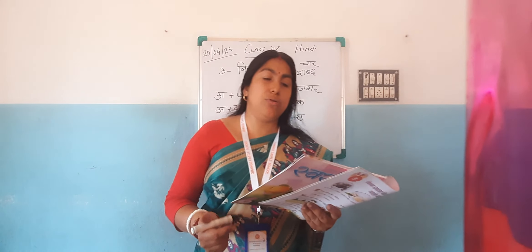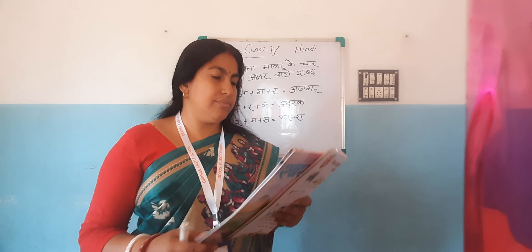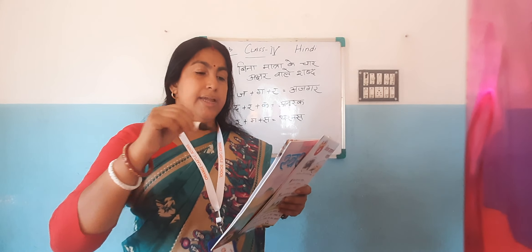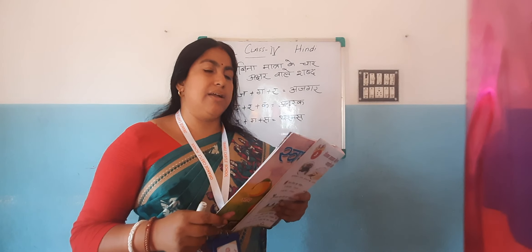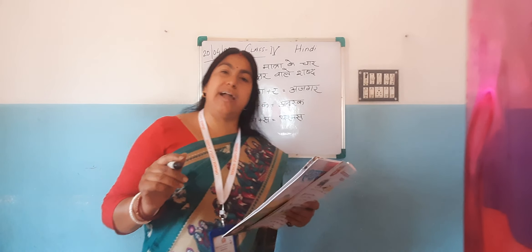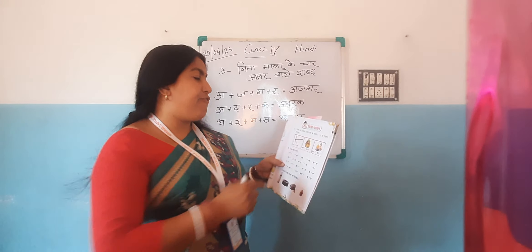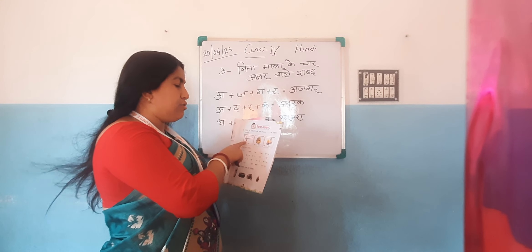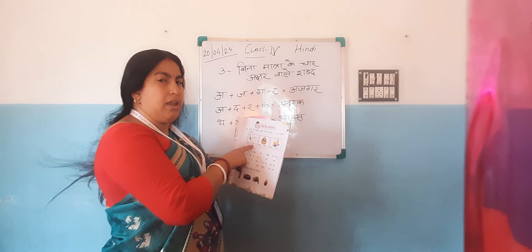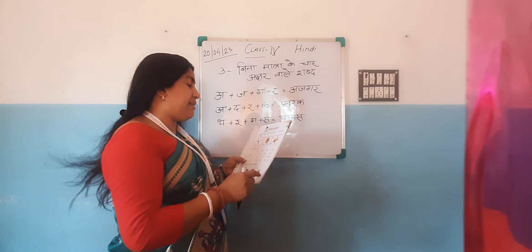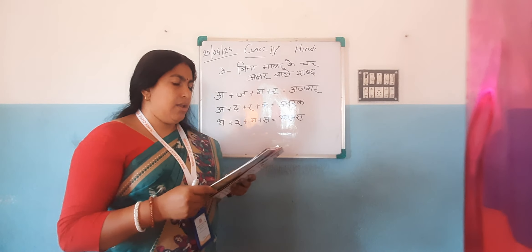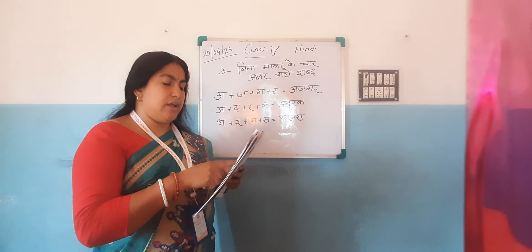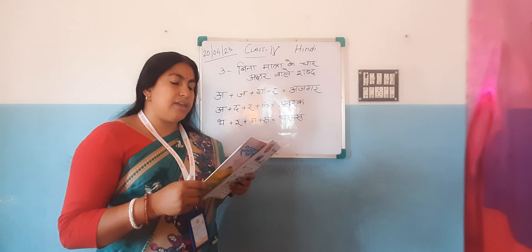Next, coming to the exercises. Chitra ko dekhkar unke naam ke saame tick ka nishan lagao — look at the pictures and put a tick mark next to the correct name. In the first picture: Hal — is it a house or is it a hal? The correct answer is hal. Next: Mal or fal? Fal means fruits, so tick fal.